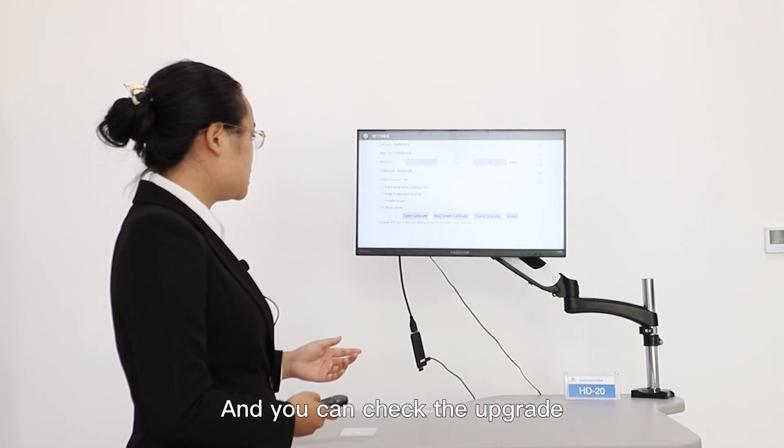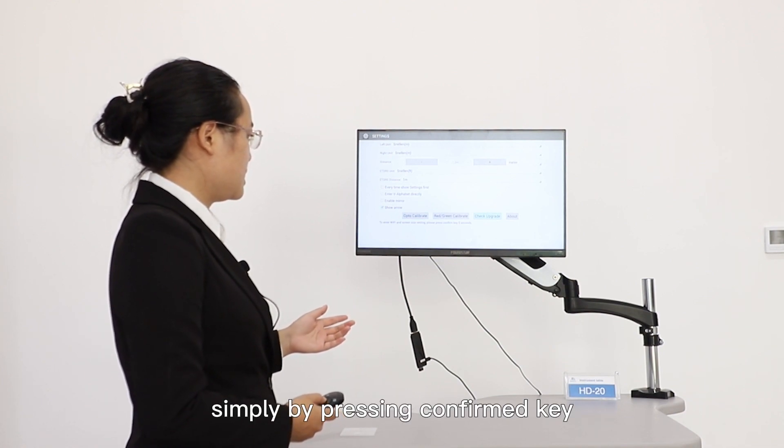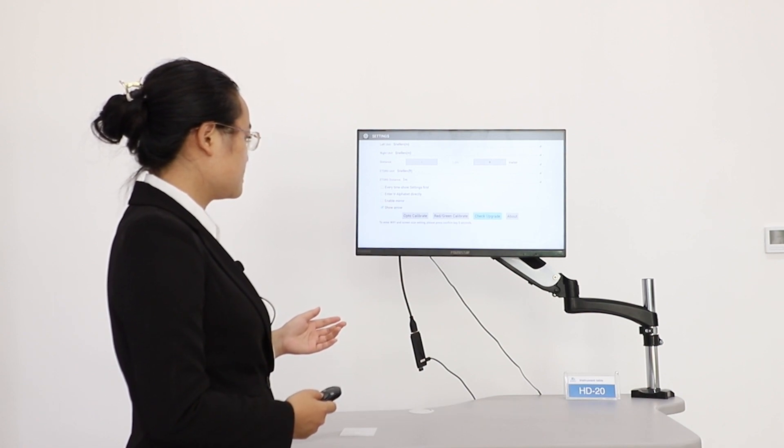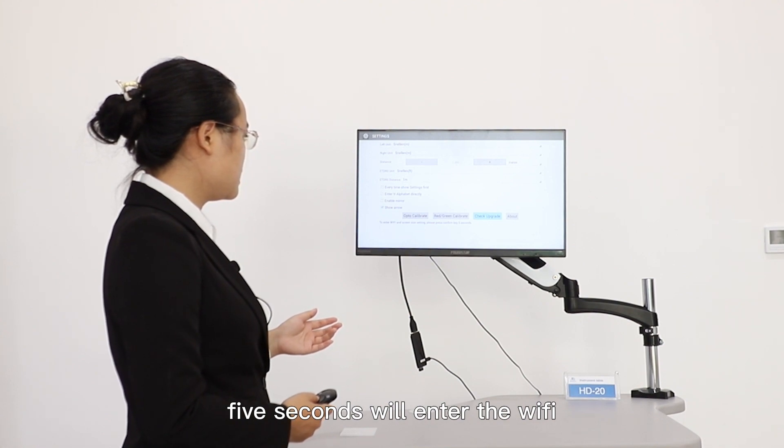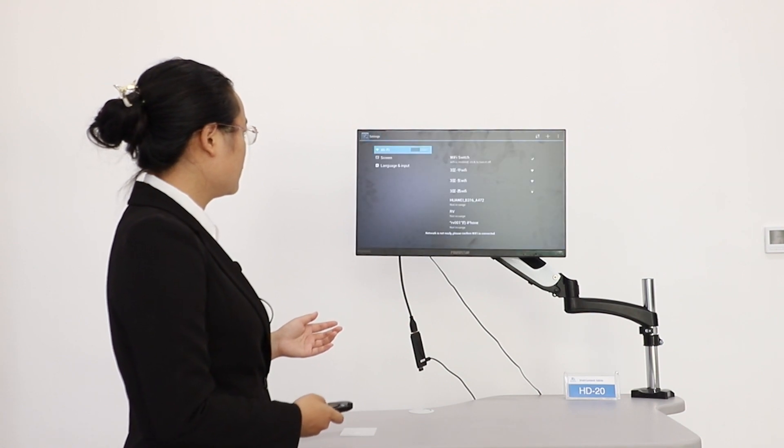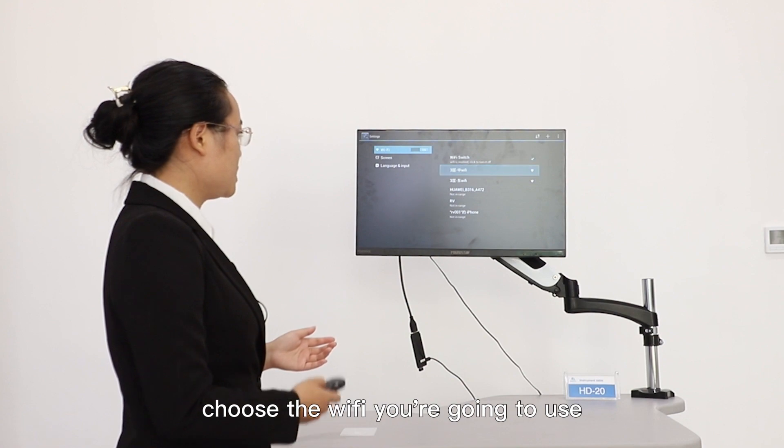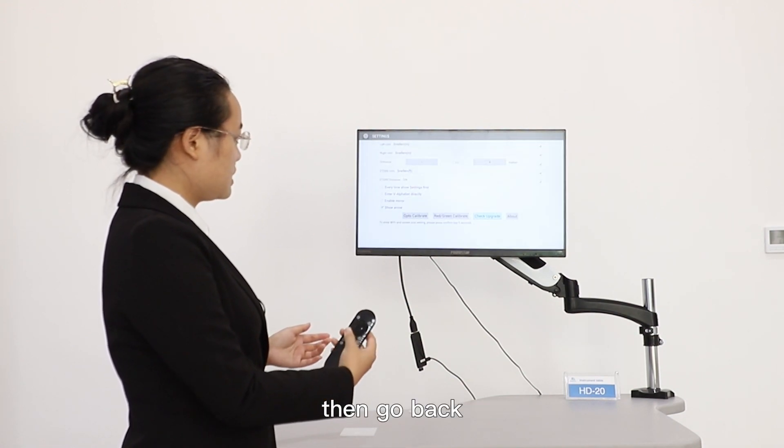And you can check the upgrade simply by confirming the key. Press the confirm key five seconds. Then we will go to enter the Wi-Fi. Choose the Wi-Fi you are going to use. Then go back.